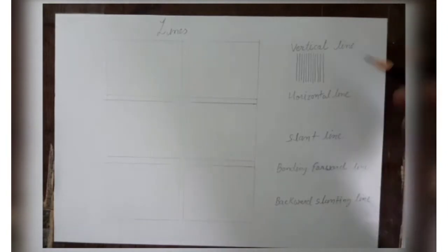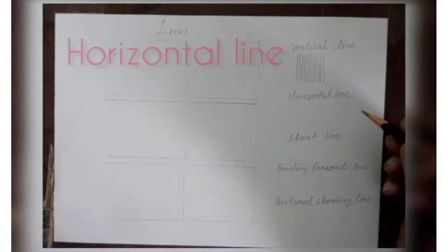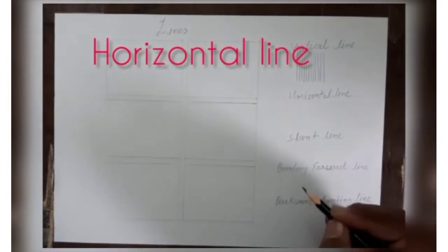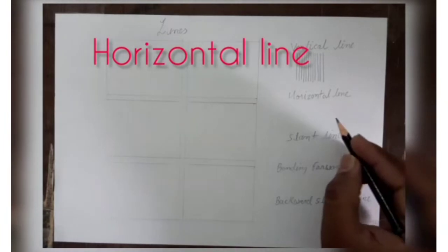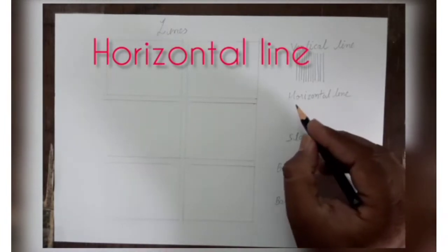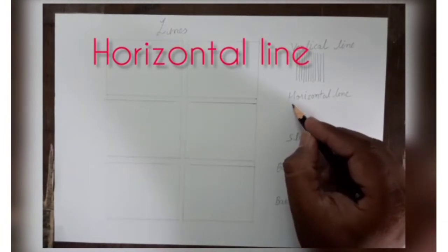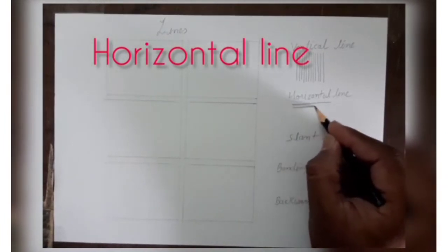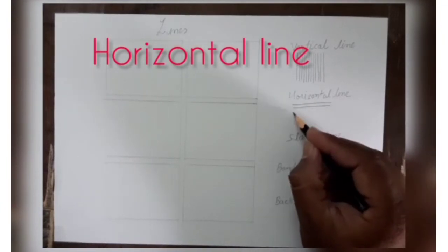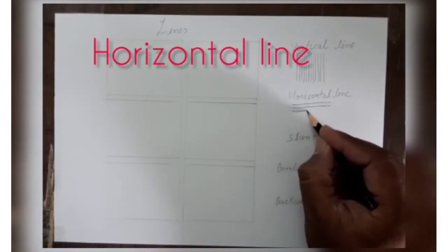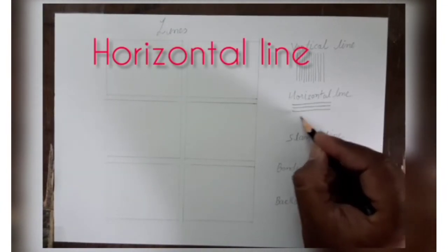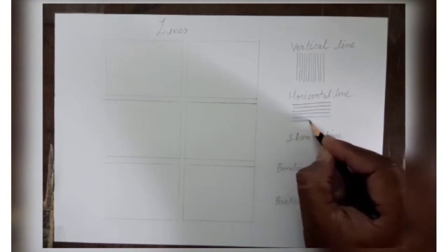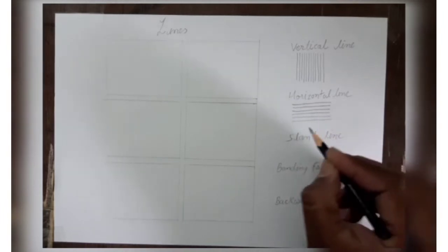Now it's time to draw horizontal line. For this line you have to start from left to right, like this — left to right. If you are lefty, then right to left you can do.